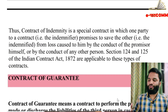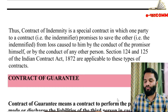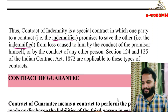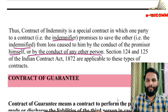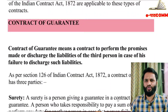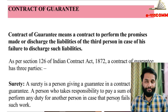In conclusion, a contract of indemnity is a contract in which one party called the indemnifier promises to save the other called the indemnified from loss caused to him by the conduct of the promisor himself or by the conduct of any other person. Now we move to the contract of guarantee, which is a slightly more elaborate contract.